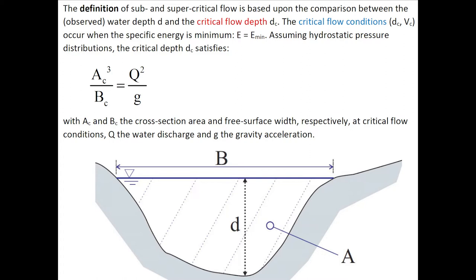The definition of subcritical and supercritical flow is based upon the comparison between the water depth and the critical flow depth. The critical flow conditions occur when the specific energy is minimum. On assuming a hydrostatic pressure distribution, there is an exact relationship between the cross-section area, the free surface width, and the discharge at critical flow condition: A³ over B equals Q² over g.